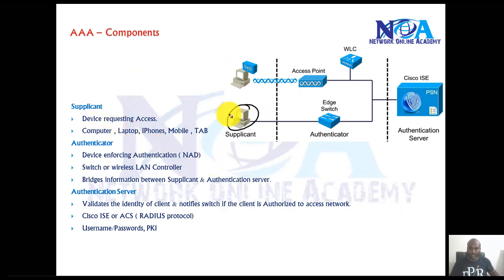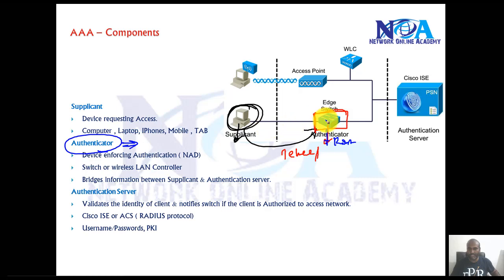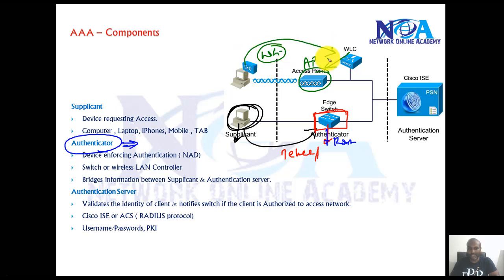Once the device used by the end user is the Supplicant device, the device he is trying to access — maybe a switch or router — is called the Authenticator. In the case of device administration he is trying to log in to the router or switch, or in the case of network access this device can be a wireless access point or wireless controller, because he is connecting through a Wi-Fi network before he can access the network.